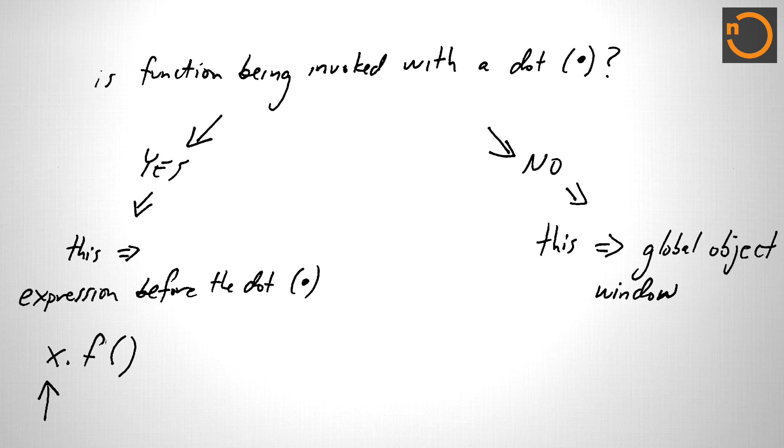So that would be something like saying f2 equals x.f and then invoking f2 without a dot. Same function object as we had over here. But in this case, there's no dot, and so this will be the global.